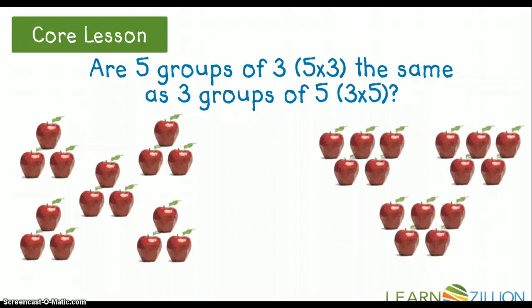Now, over here, I have 3 groups of 5. Let me count just to make sure that I have the same amount of apples. 1, 2, 3, 4, 5, 6, 7, 8, 9, 10, 11, 12, 13, 14, 15. I had 15 in this group of apples when I had 3 groups of 5. And, I had 15 apples in total in this group when I had 5 groups of 3.